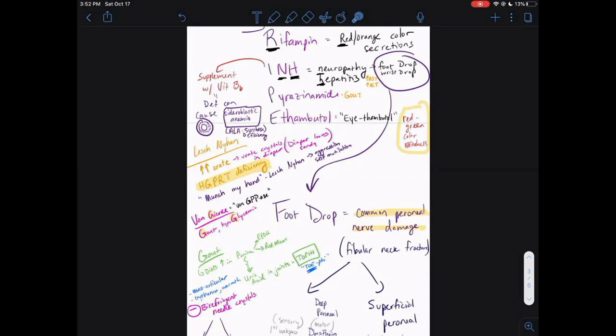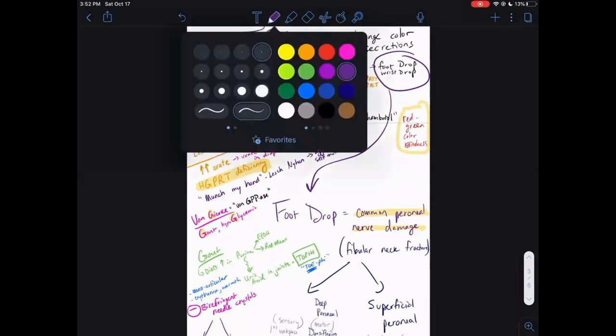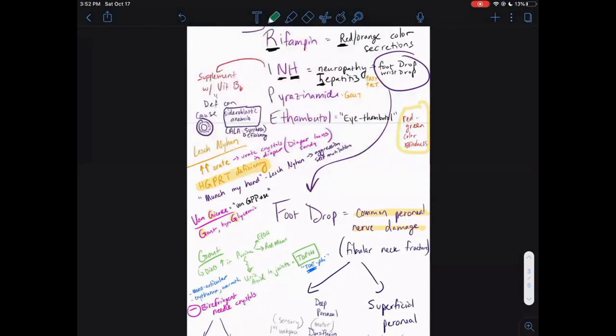On somebody's labs that has sideroblastic anemia, what's that going to show? On their labs, you're going to have really high iron levels. So high iron, and guess what? If you have high iron, you're going to have high ferritin because ferritin is a storage form of iron. Remember, we said it's an iron-laden erythrocyte. It's just iron encircling this nucleus here. So you have high iron and you have high ferritin, and that's going to basically point you in the direction of sideroblastic anemia.